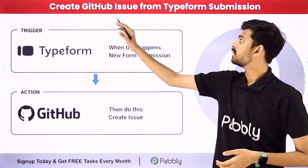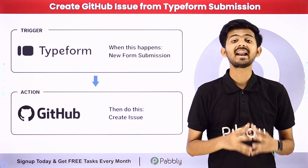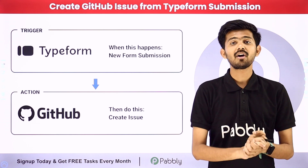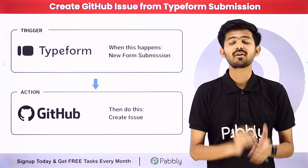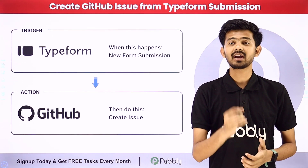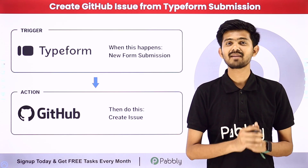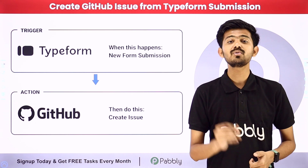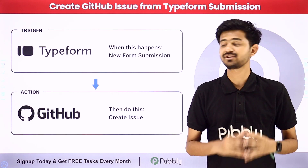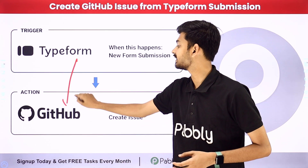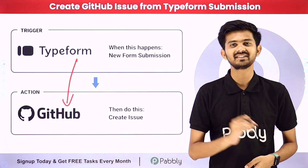Hello everyone. Today our topic is how to create a GitHub issue from a Typeform submission. I've created a new issue form in Typeform, and whenever someone has an issue they can fill that form. My objective is that whenever I receive a new form submission from Typeform, the details will automatically be used to create a new issue in GitHub. To build this connection between Typeform and GitHub, I'm going to use Pably Connect, which is an amazing software for automation and integration.